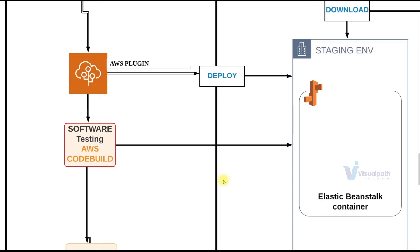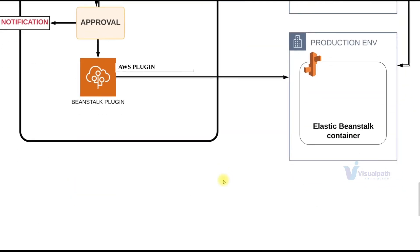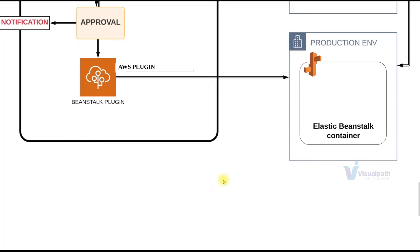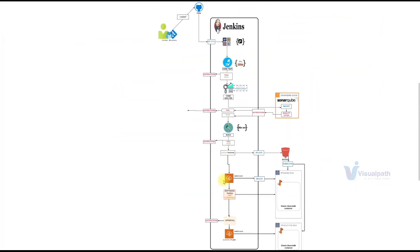Once the artifact is packaged, it is uploaded to an S3 bucket and from there deployed to the Beanstalk environment using the Beanstalk plugin. Once deployment to the staging environment is completed, we run software testing using AWS CodeBuild service, which validates our deployment. If successful, it can be promoted to the next level, and another Beanstalk plugin setting deploys the artifact to the production Beanstalk environment. Beanstalk will also be connected to RDS, and optionally you can integrate Elastic Cache and ActiveMQ. So it's the same continuous delivery but mixing Jenkins CI with AWS Cloud Services.